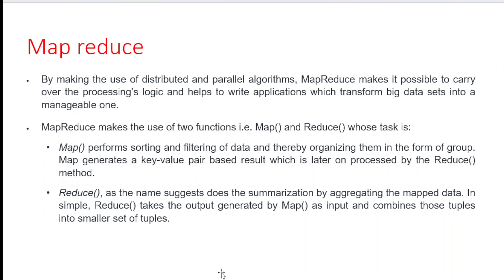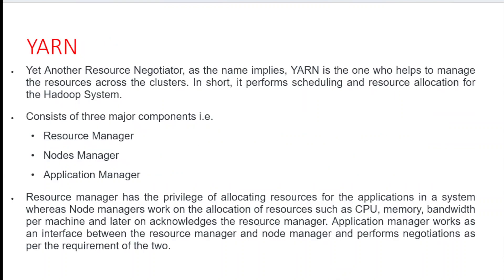MapReduce performs parallel processing. It has two basic functions: the Map function and the Reduce function. The Map function performs sorting and filtering of data, organizing it into groups, and generates a key-value pair based result. The Reduce function, as the name suggests, performs summarization by aggregating the map data — it takes the output generated by Map as input and combines those tuples into a smaller set of tuples.